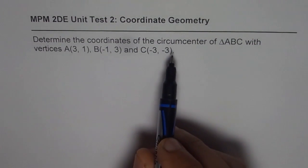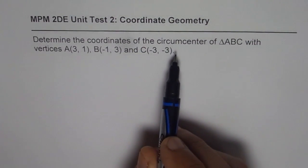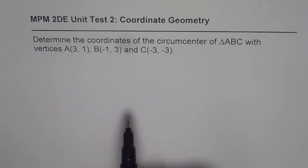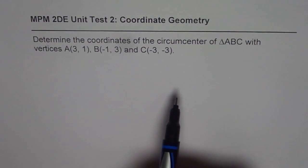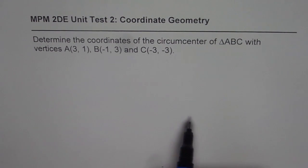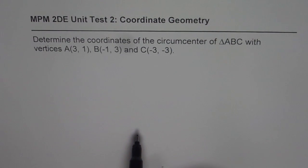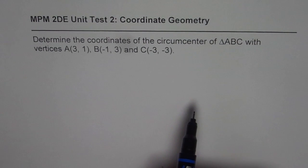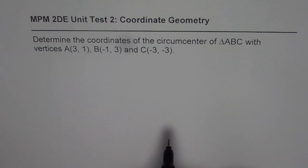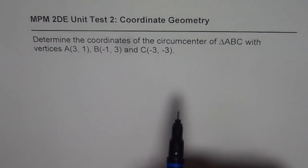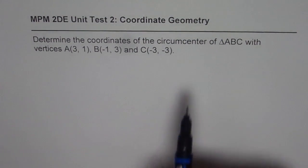What is circumcenter? Circumcenter is the point of intersection of right bisectors of the sides of the triangle. That point will be equidistant from the vertices of the triangle — that is the significance of circumcenter. From that point, you can draw a circle touching all three vertices, which is how it gets its name: circumcenter.